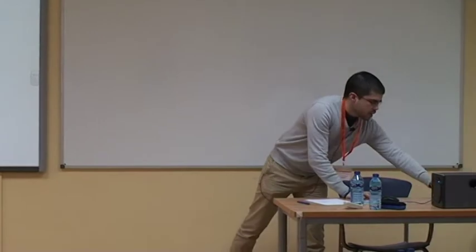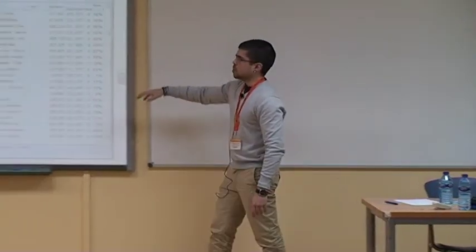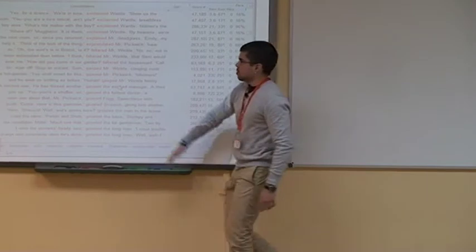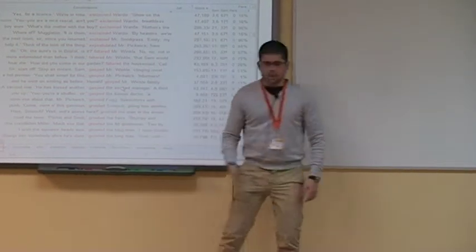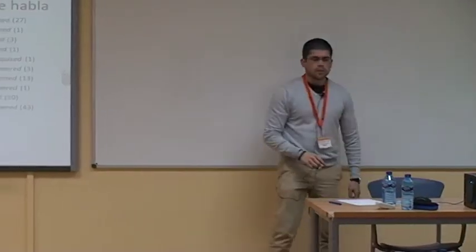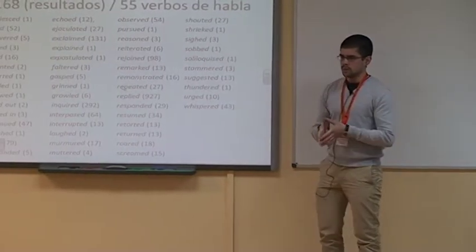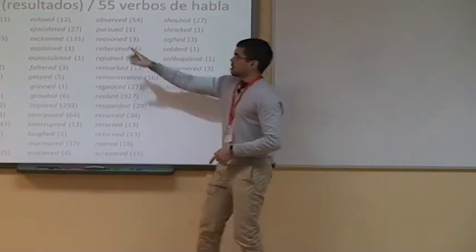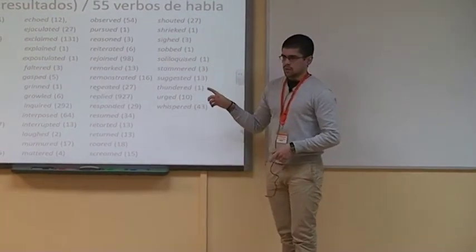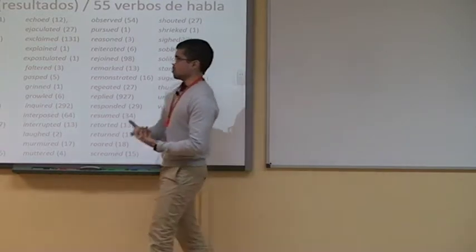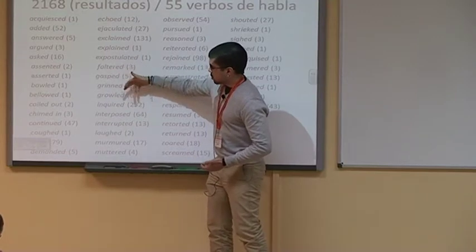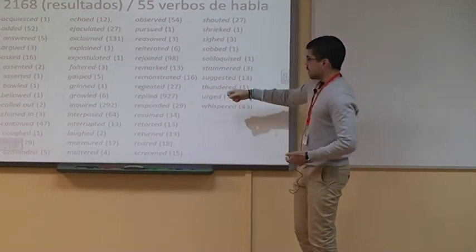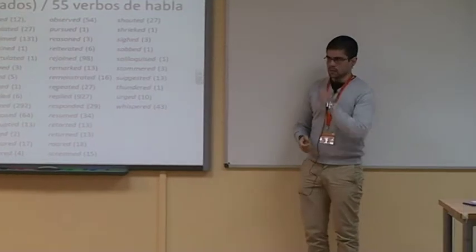Si hacemos la concordancia mencionada —esto es una captura de pantalla— podemos extraer todos los verbos. Vemos que hay falter, gasp, grind, growl, etc. En total hay 2.168 verbos —tokens— en Pickwick Papers, que se dividen en 55 verbos distintos. Y hay algunos que son muy específicos: bawl, bellow, los ya mencionados falter, gasp, grind, growl, stammer, thunder como verbo de habla, etc.